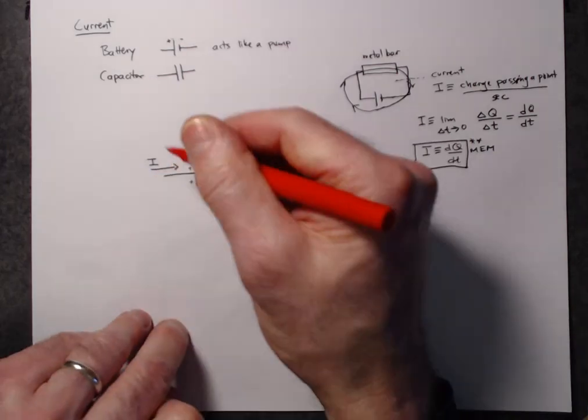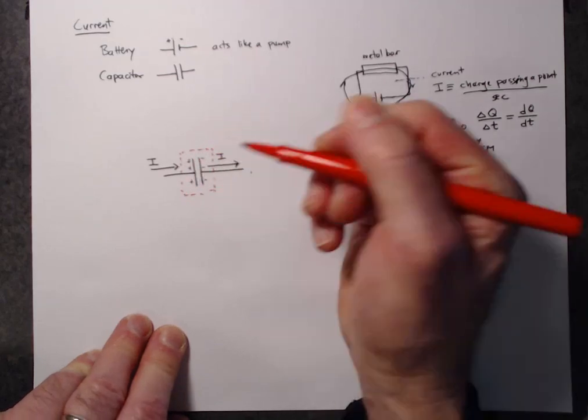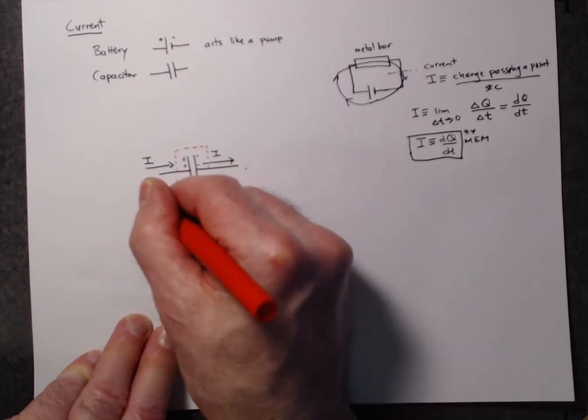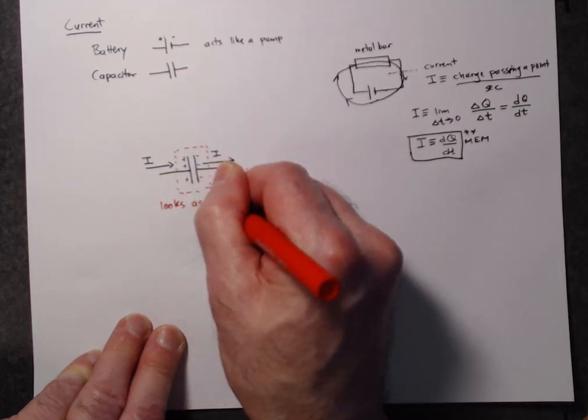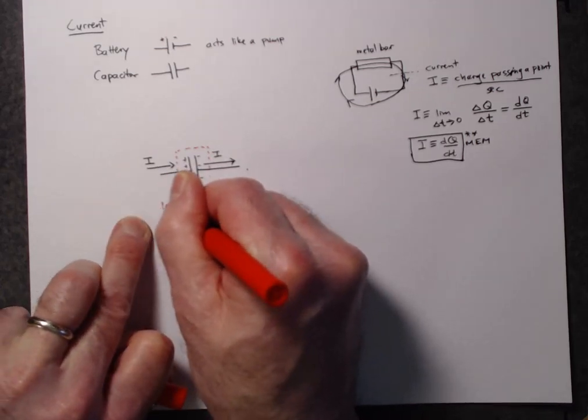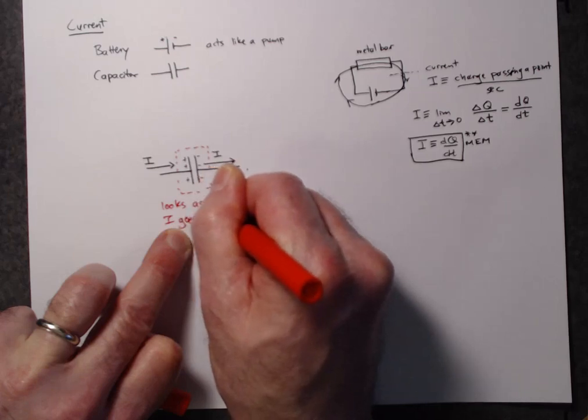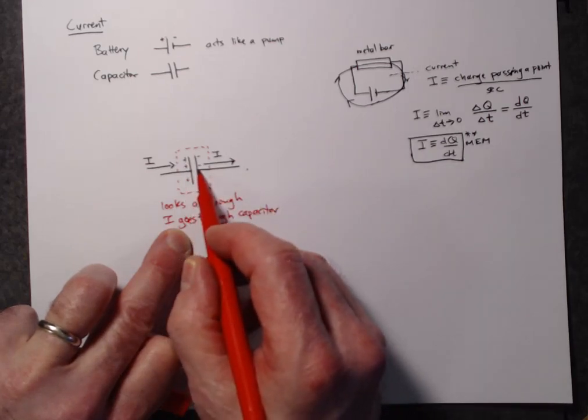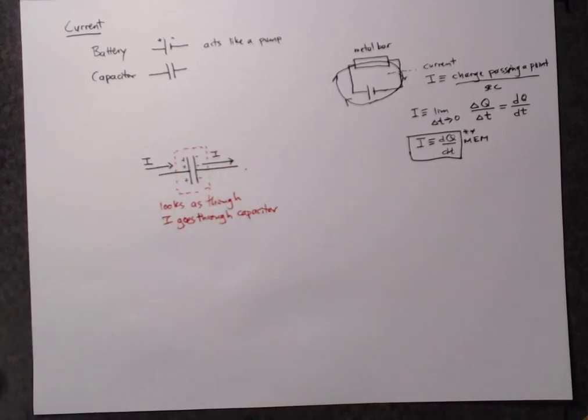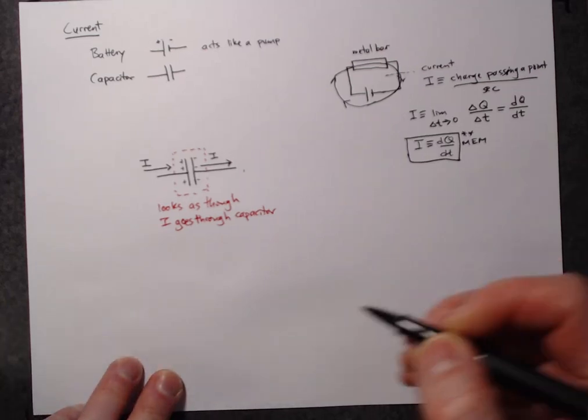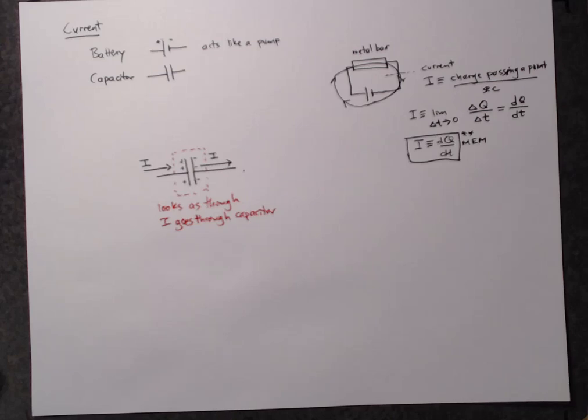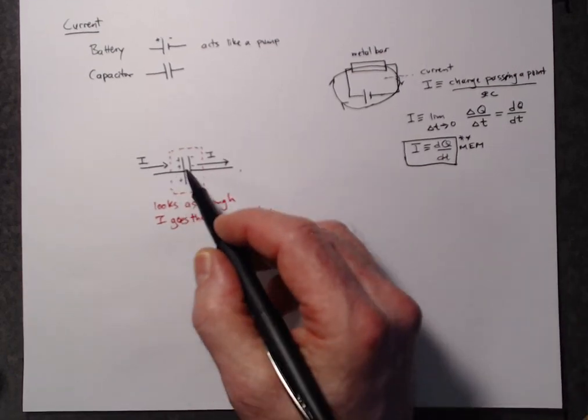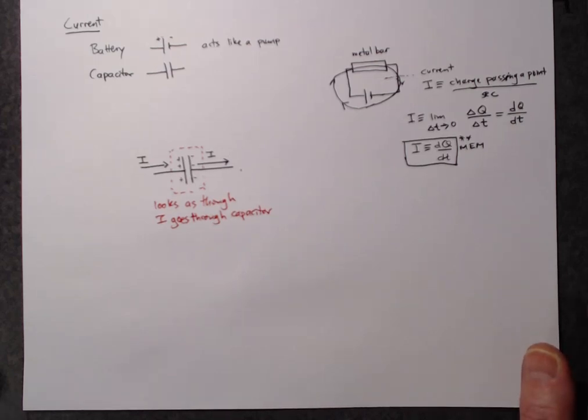Now, if I enclose the capacitor inside of a box so that I can't see inside, I see current going into the left side of the box and coming out of the right side of the box. So it looks as though the current is going through the capacitor. Even though there is never any charge that actually goes across this gap between the two capacitor plates, from the outside, it behaves as if the current is going through the capacitor as the capacitor charges up. So we will talk about current going through capacitors, even though there is no actual current moving from one side of the capacitor to the other. There's no charge moving across this gap. It still looks like there is current going through it as seen from the outside world.